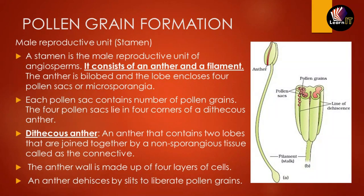Pollen grains are formed inside the male reproductive unit called the stamen. The stamen is divided into two parts: the upper part is the anther and the lower part is the filament. In a transverse section, the anther is a bi-lobed structure — two lobes — divided into four parts, which contain pollen sacs. These pollen sacs contain pollen grains.